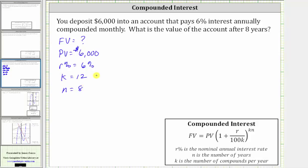Which means the future value is equal to 6,000 times the quantity one plus 6 divided by 100 times 12, and this sum is raised to the power of K times N, which is 12 times 8.